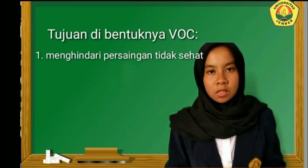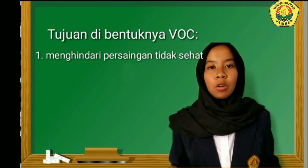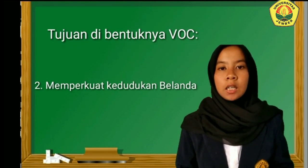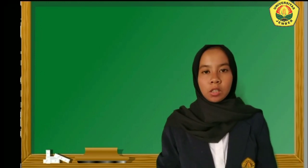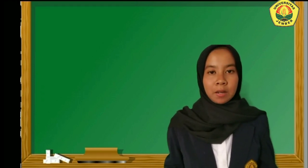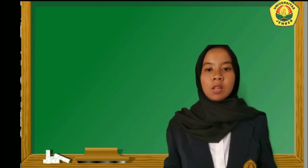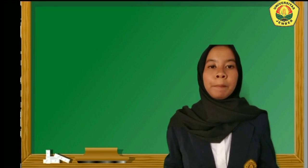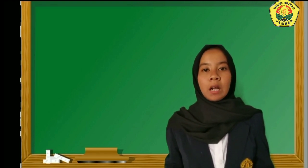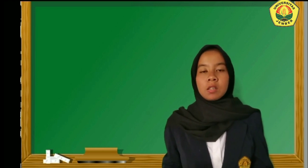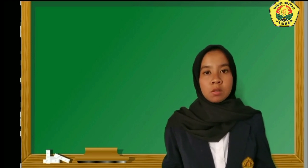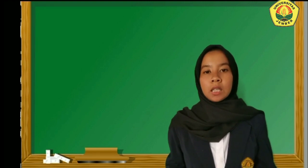Tujuan dibentuknya VOC yang pertama yaitu menghindari persaingan antara orang-orang Belanda yang tidak sehat. Yang kedua yaitu memperkuat kedudukan Belanda dalam menghadapi persaingan dagang dengan negara lainnya. Hak yang dimiliki VOC: pertama, dapat melakukan monopoli perdagangan dari Tanjung Harapan sampai Selat Magelhaens termasuk Kepulauan Nusantara. Kedua, VOC dapat membentuk angkatan perang sendiri. Ketiga, mampu melakukan peperangan. Keempat, mengadakan perjanjian dengan raja-raja setempat, mencetak mata uangnya sendiri, mengangkat pegawainya sendiri, dan memerintah di negeri jajahan.